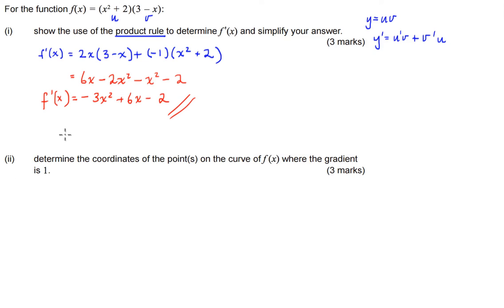Cool, now what does it say for part 2? Determine the coordinates of the point or points on the curve where the gradient is 1. Alright so what we're looking for is where f dash of x equals 1.